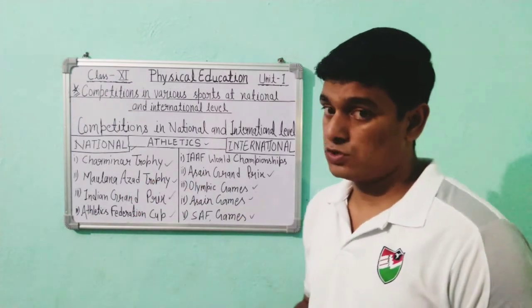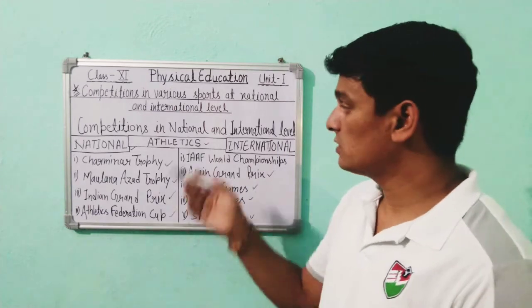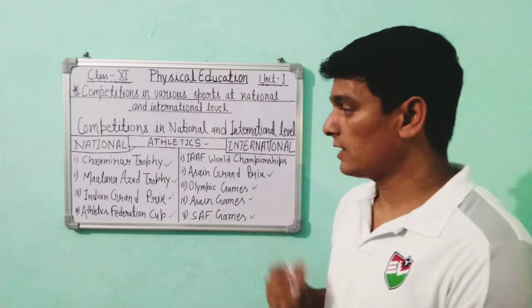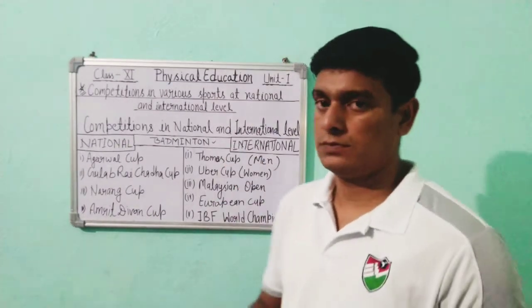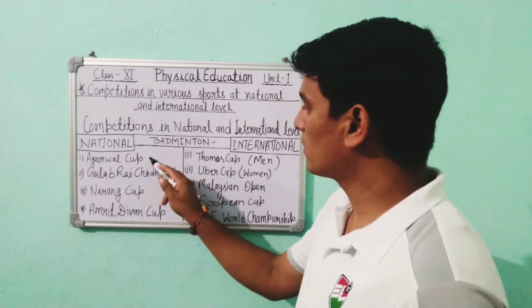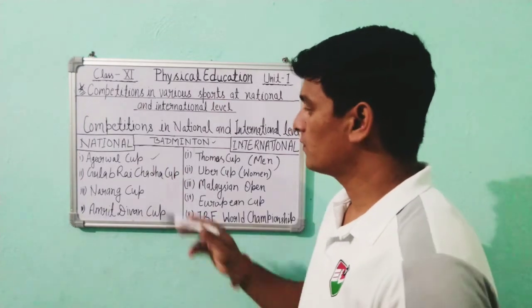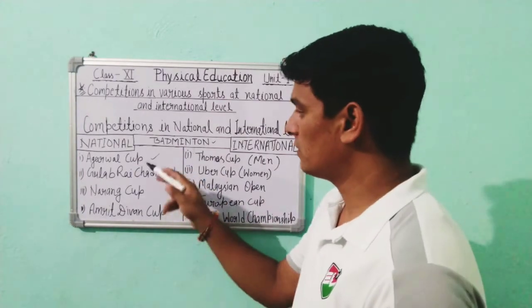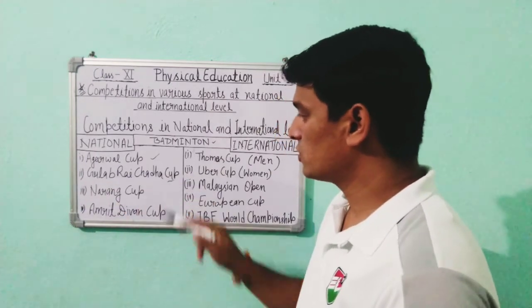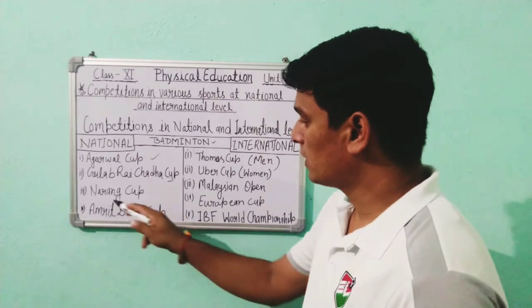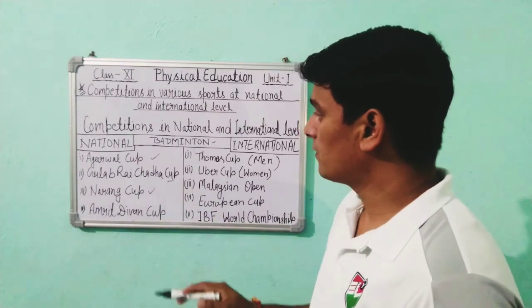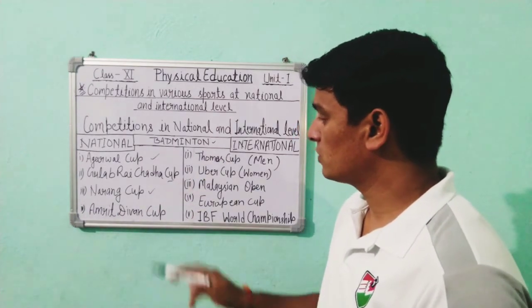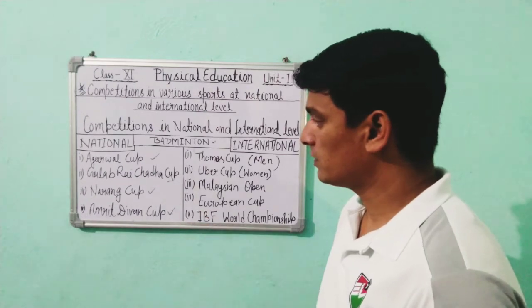A typical exam question would be: 'Charmer Trophy is associated with which sport?' — the answer is Athletics. Now let's talk about Badminton. Important national competitions of badminton include the Agarwal Cup, which is very popular, and the Gulabi Chaddha Cup, which is also very important.